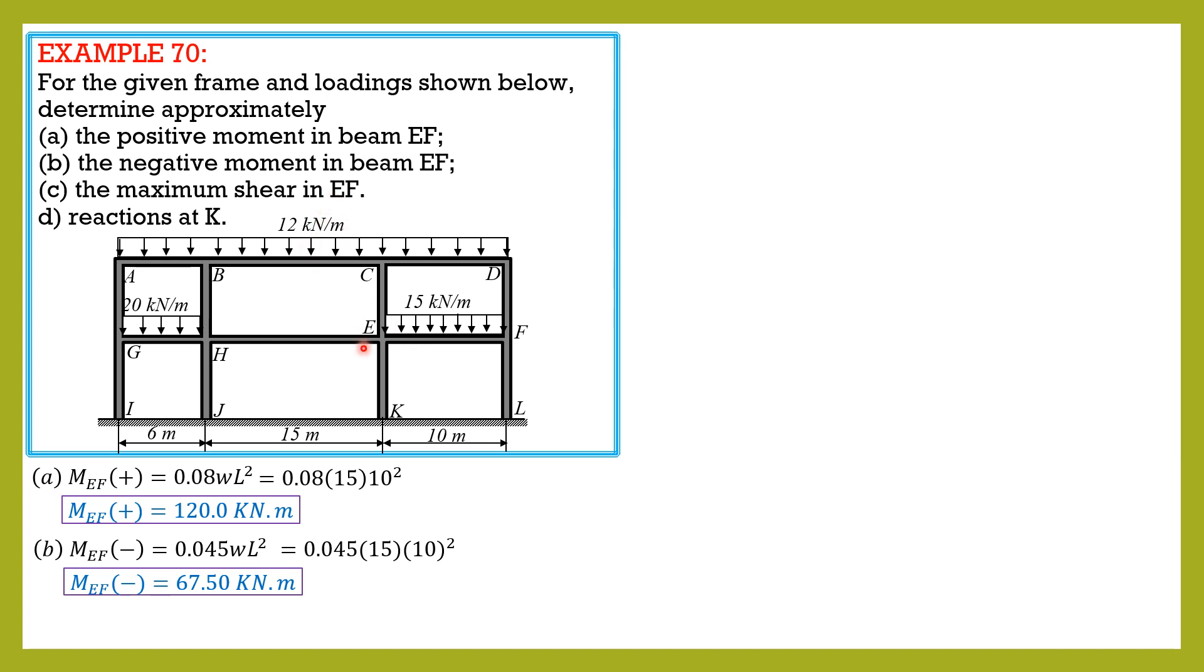For letter C, the maximum shear in EF is just WL over 2, or the vertical reaction at E or F. So 15 times 10 over 2, and it is 75 kilonewtons.